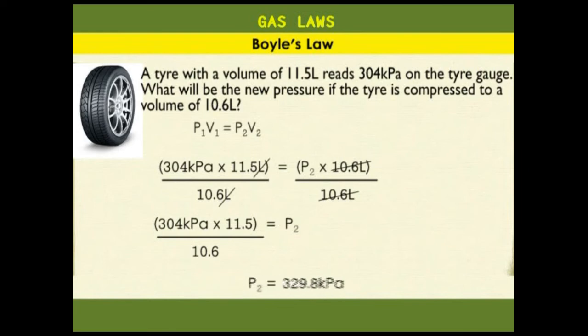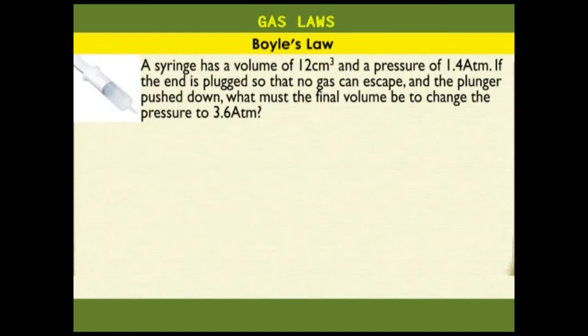Another example. A syringe has a volume of 12 cubic centimeters and a pressure of 1.4 atmospheres. If the end is plugged so that no gas escapes and the plunger is pushed down, what must the final volume be to change the pressure to 3.6 atmospheres?